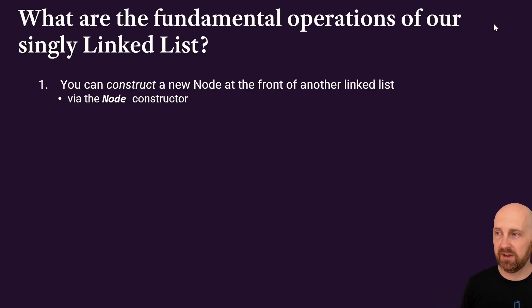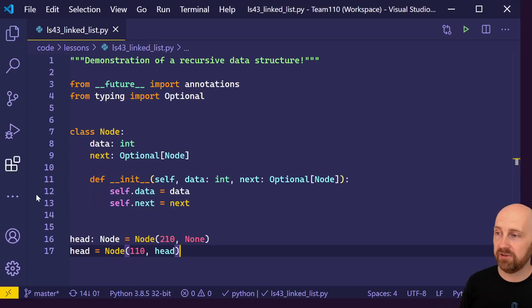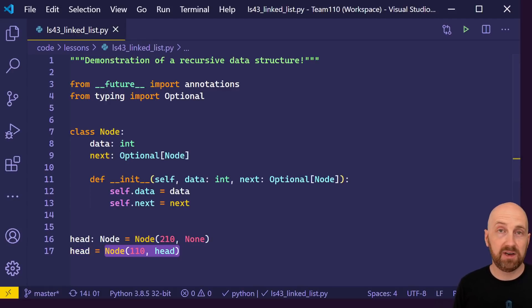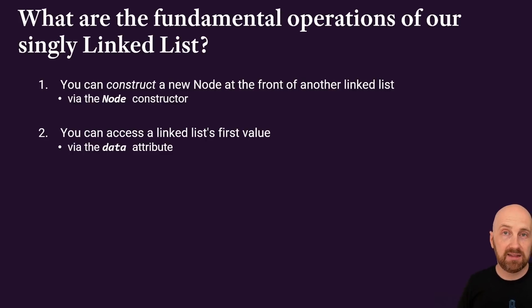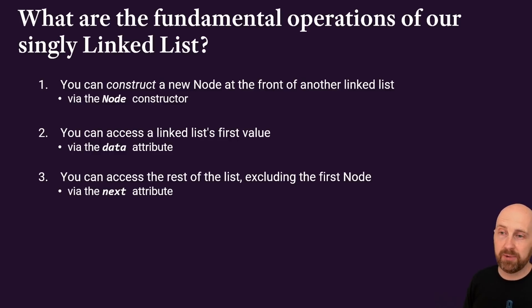What are some fundamental things we can do with our linked list? We've seen we can construct a new node at the front of another list — we always need a next reference, which is the start of another list (possibly the empty list). We can access the list's first value through the data attribute and the rest of the list through the next attribute. With these three fundamental capabilities — constructing a node, accessing data, and accessing next — we'll be able to write recursive algorithms to process linked lists.